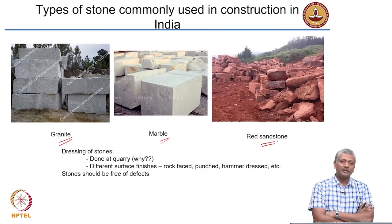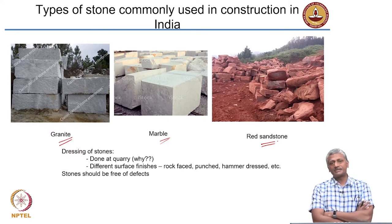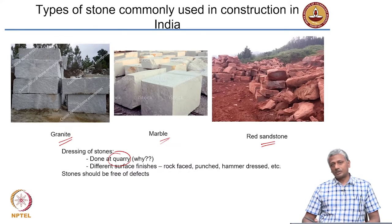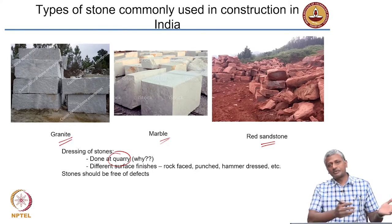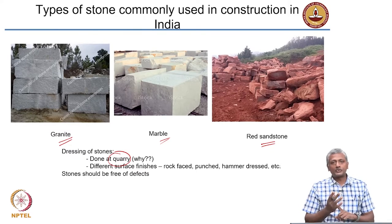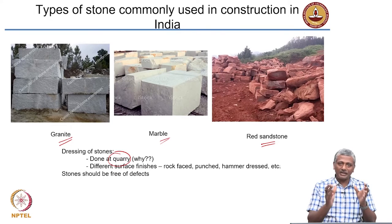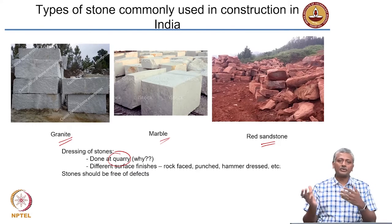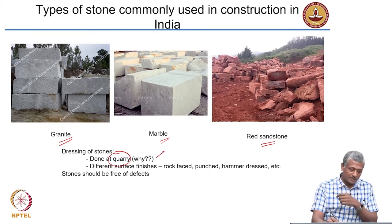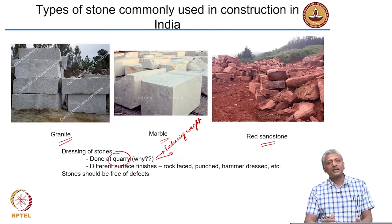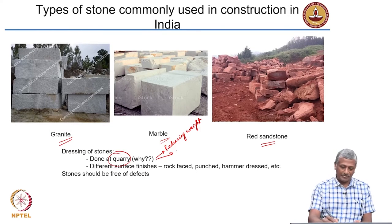These stones have to be dressed to the right size. Most often, dressing is done at the quarry itself — wherever you are extracting the stone. Why do this at the quarry rather than at the job site? First and foremost, when you dress it to the right size, you reduce the weight of the block that has to be carried to the job site. So dressing — cutting and shaping — reduces the weight to be transported, and that is a major advantage.